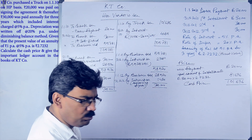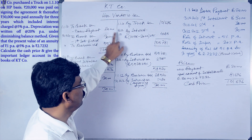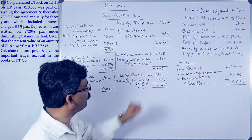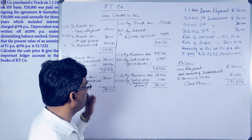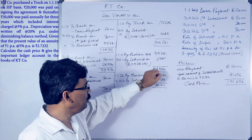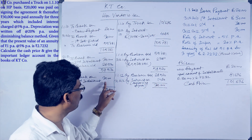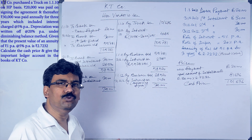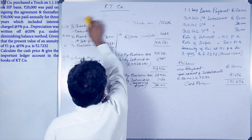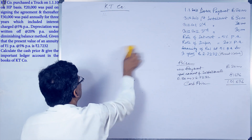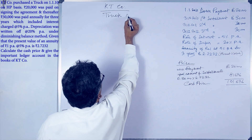To summarize the Hire Vendor Account: the truck was purchased at ₹1,01,696, down payment ₹20,000 was paid immediately, interest for year one was ₹4,085 on the balance of ₹81,696, first installment ₹30,000 was paid leaving ₹55,781. Interest for year two was calculated on ₹55,781, second installment ₹30,000 paid leaving ₹28,570. In the last year the interest is taken as the balancing figure of ₹1,430, and the third installment of ₹30,000 closes the account.